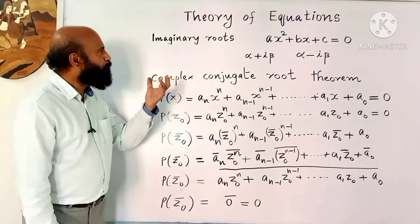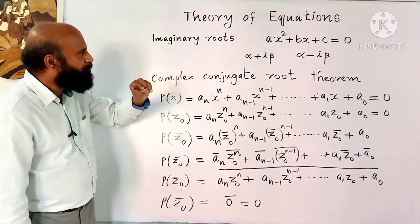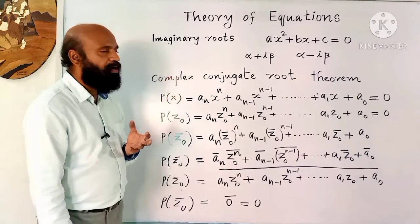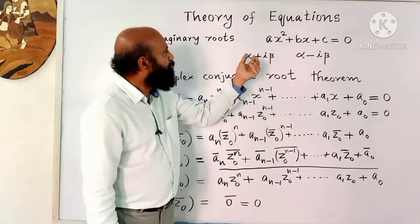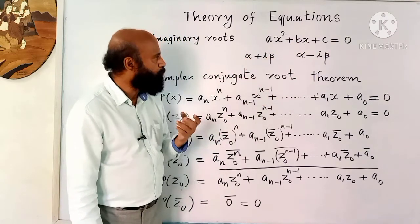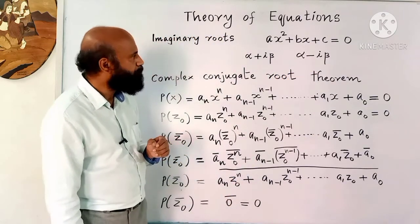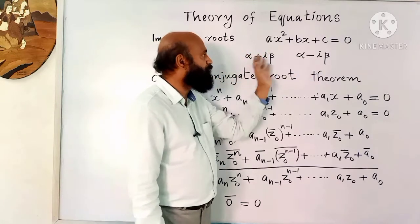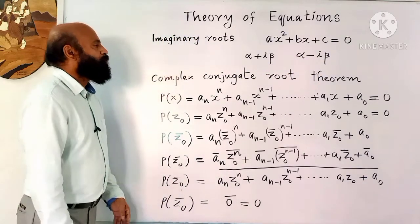In this video I am going to explain one important property of imaginary roots of polynomial equations with real coefficients. For a quadratic equation with real coefficients, if alpha plus i-beta is a root, alpha minus i-beta will also be a root. That means complex roots — imaginary roots — occur in pairs.